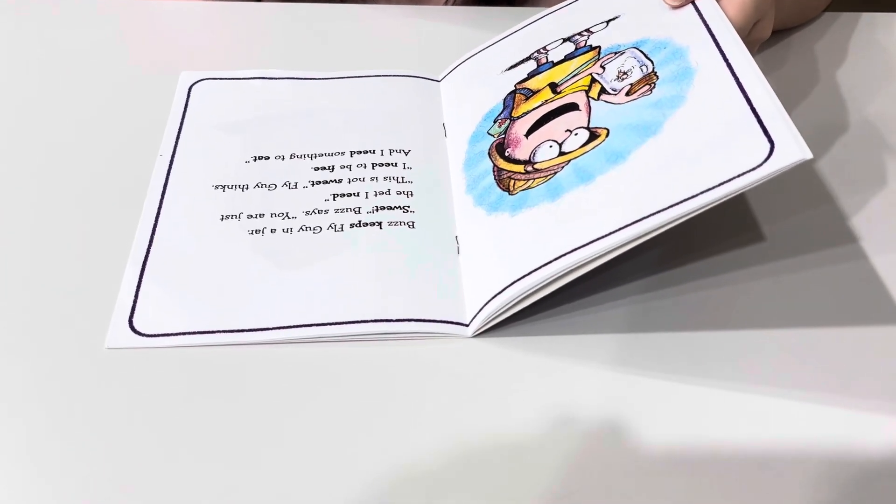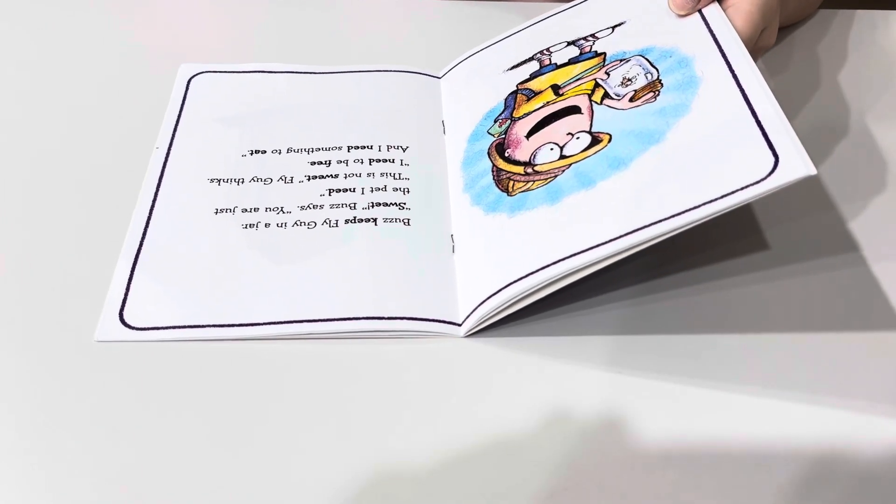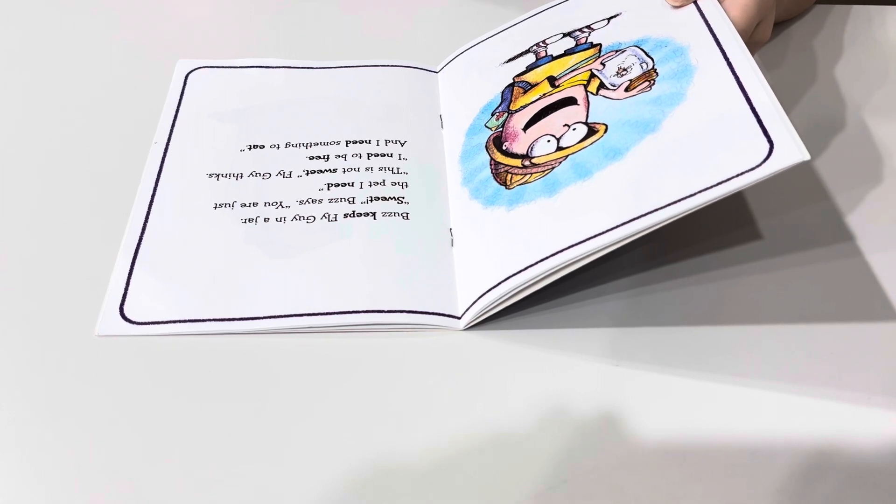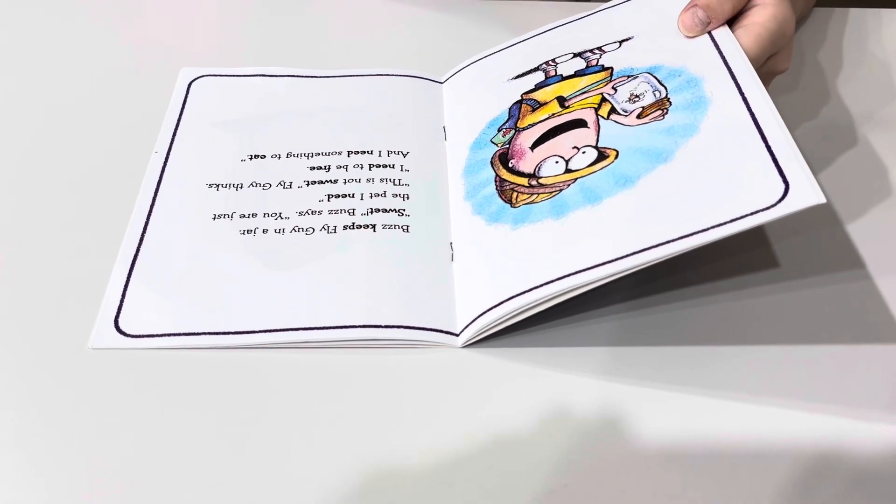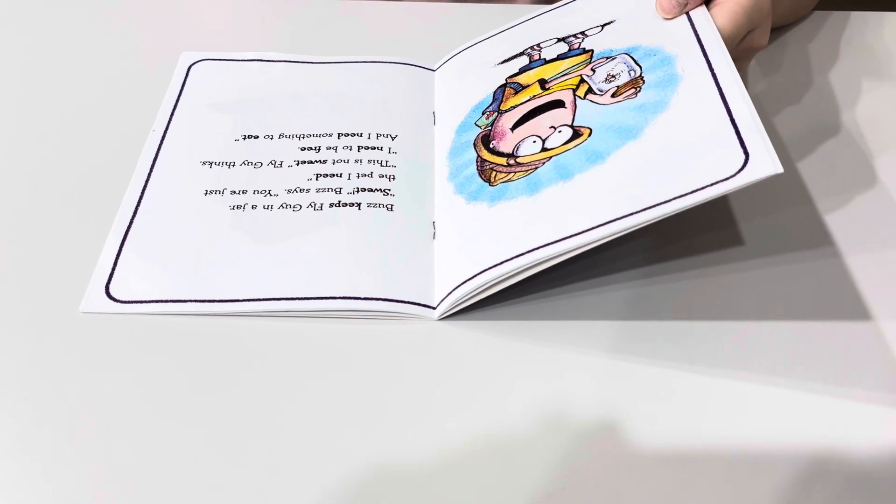Buzz keeps Fly Guy in a jar. Sweet, Buzz says. You are just the pet I need. This is not sweet, Fly Guy thinks.